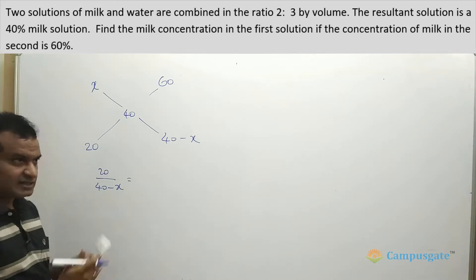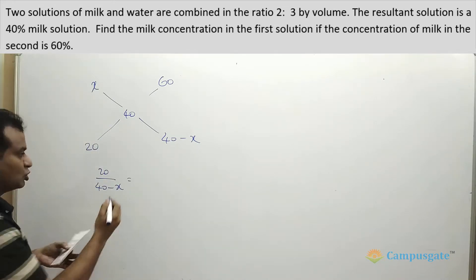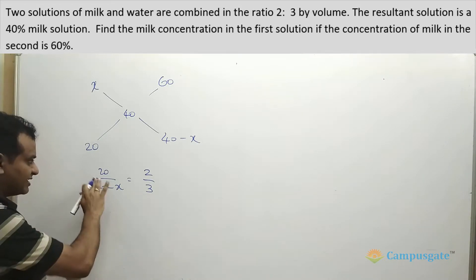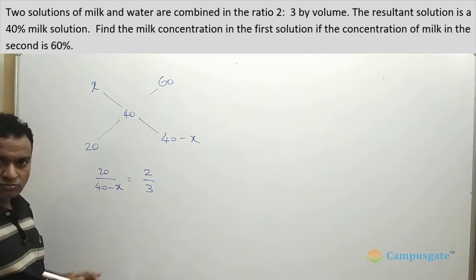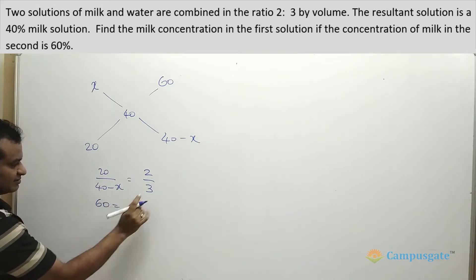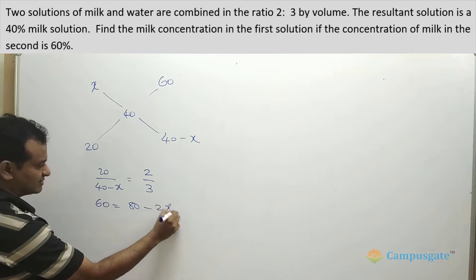But in the question it is given that these two are mixed in the ratio 2 to 3. So you can simply equate this ratio to 2 to 3. Then you can simply cross multiply them. So 3 into 20 is 60, giving 80 minus 2x.